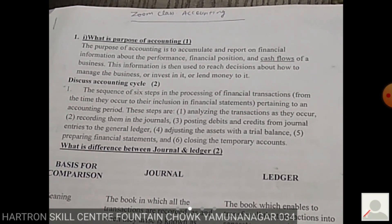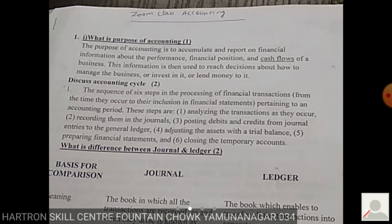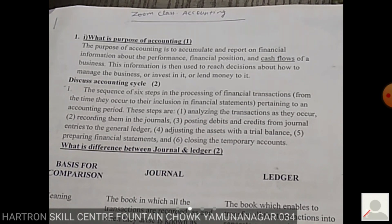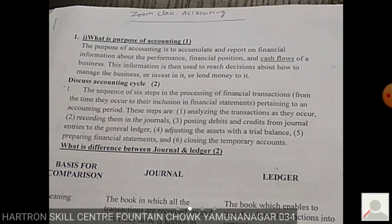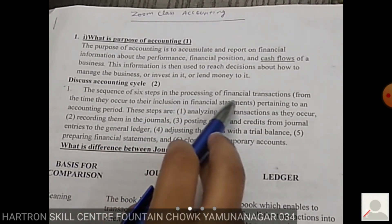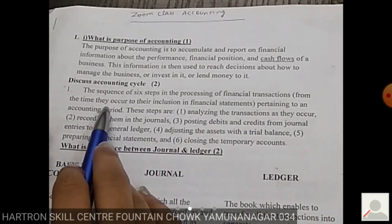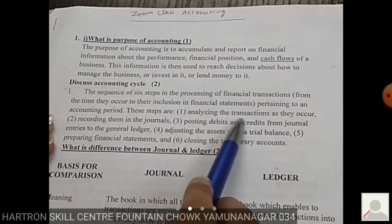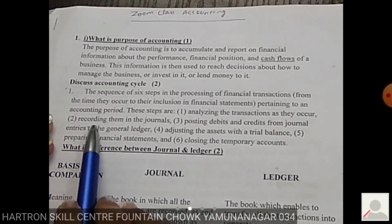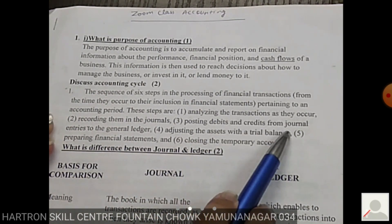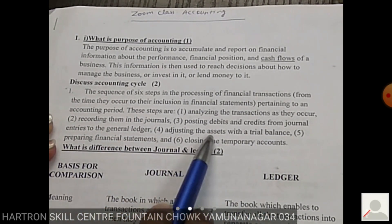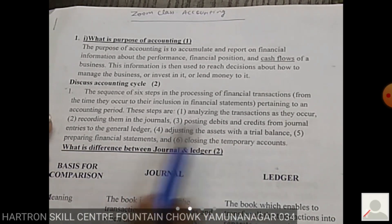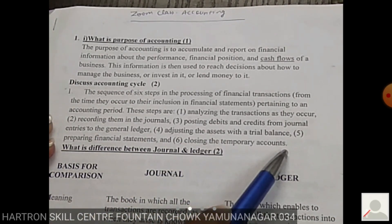Next, we discuss the accounting cycle, which we have already covered in the practical part. From the theoretical viewpoint, the accounting cycle is the sequence of six steps in the processing of financial transactions — from the time they occur to their inclusion in financial statements. The steps are: analyzing transactions, recording in journals, posting to ledger, adjusting with trial balance, preparing financial statements, and closing temporary accounts.